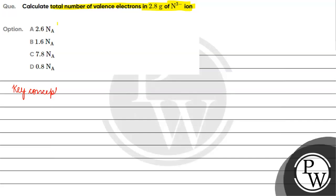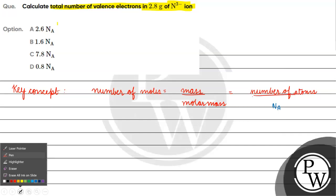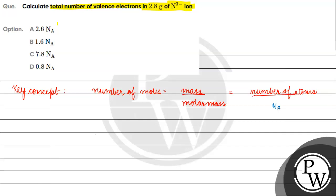The key concept for this question is: number of moles equals mass divided by molar mass, which equals the number of atoms or molecules divided by Avogadro's number. The mass given is 2.8 grams. For 1 nitrogen atom, the atomic mass is 14 grams per mole.